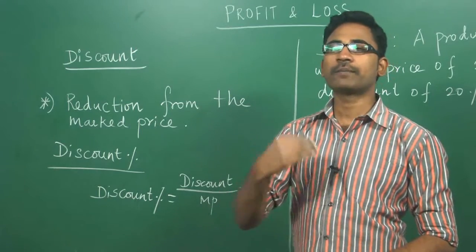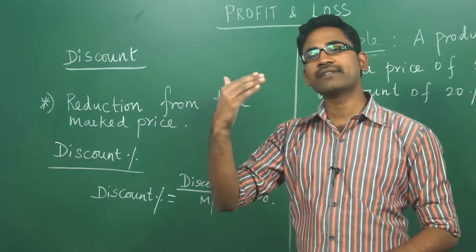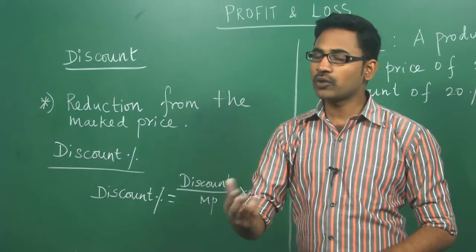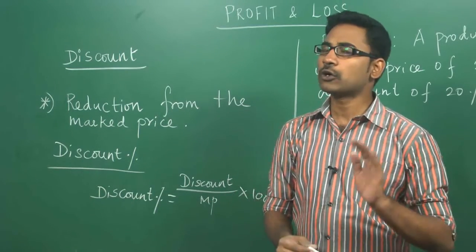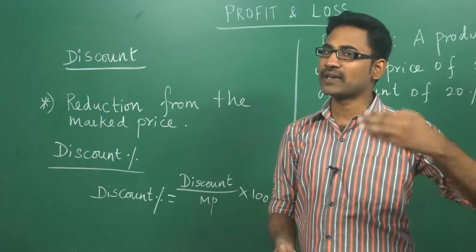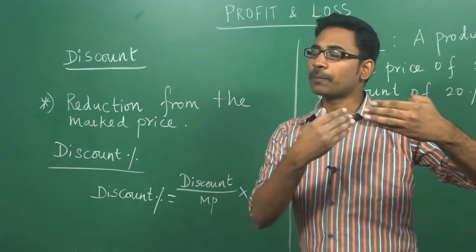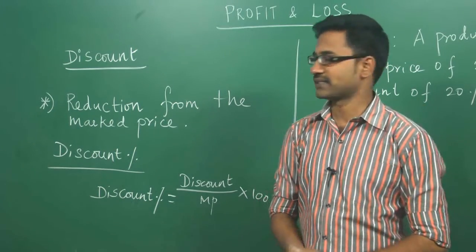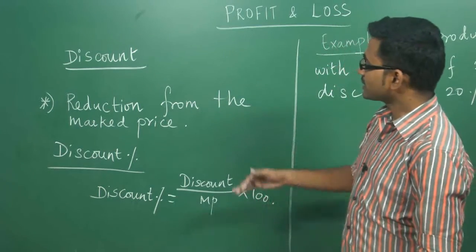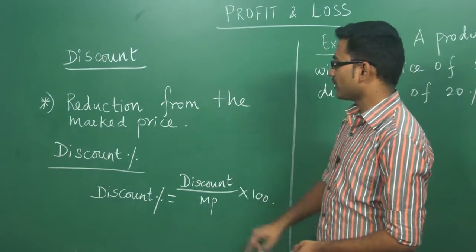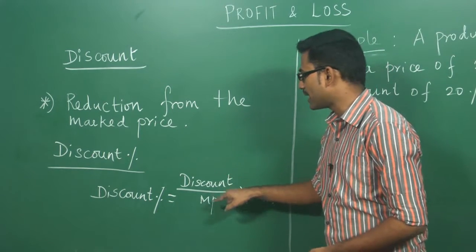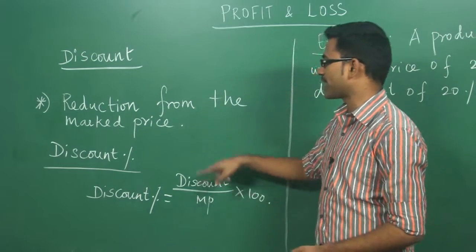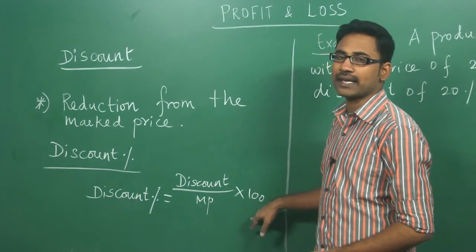For example, if a product is marked at 100 rupees and the shopkeeper gives a discount of 20 rupees, you are going to pay only 80 rupees because the list price is 100 and the discount is 20. The discount percentage is calculated as: whatever discount you are getting divided by the market price, multiplied by 100 — that gives you the discount percentage with respect to market price.